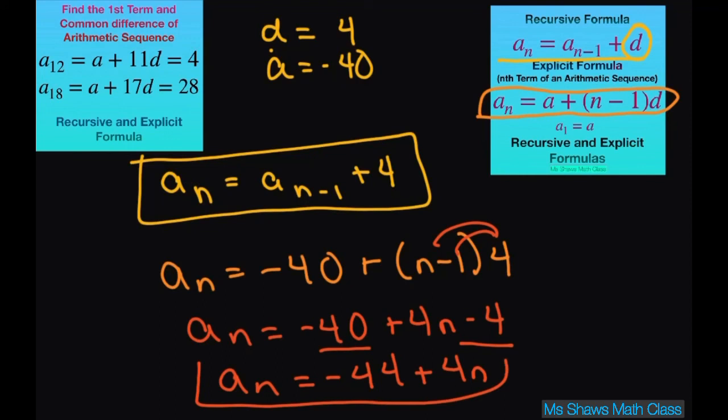You can rearrange these if you want. You can write this as a sub n equals 4n minus 44 if you want to. And that's it. Thank you. Have a nice day. Bye bye.